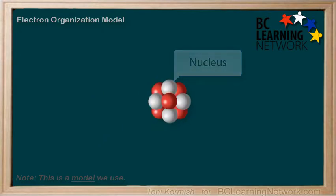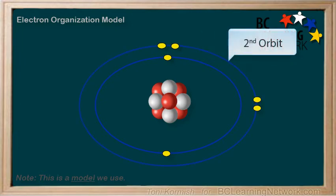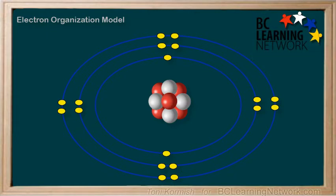The first orbit can only hold two electrons, and then it is full. The second orbit can hold up to eight electrons till it is full, and the third orbit can hold up to eight electrons till it is full. For the purpose of this course, we will not go beyond the third electron level.